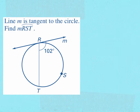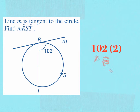An example of this theorem states that line M is tangent to the circle, and it asks us to find the measure of arc RST. RT is a chord on my circle, and it is intersecting the tangent line M on the circle. They tell us that angle R is 102 degrees, and they ask us to find arc RST, which is intercepted by that angle. To find the measure of the arc, I'm going to take my angle measure of 102 and multiply that by 2. I find that the measure of arc RST is 204 degrees.